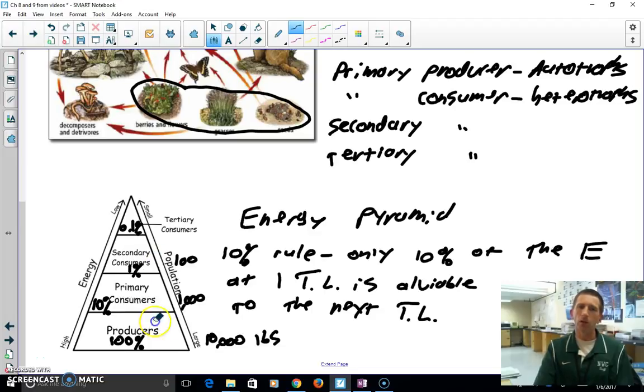But you kind of get the idea. So we can use this 10% rule as a good estimation of how many organisms or, more specifically, how much biomass there is at each trophic level.